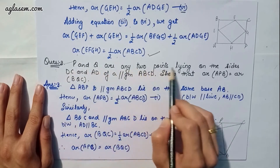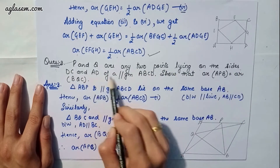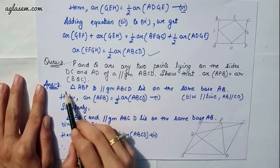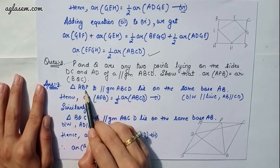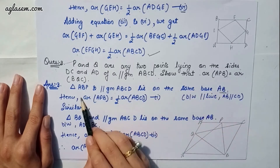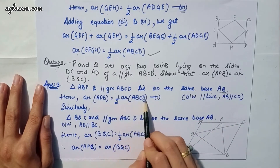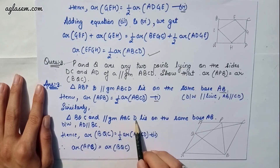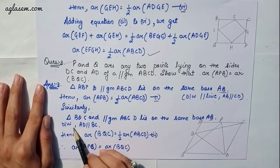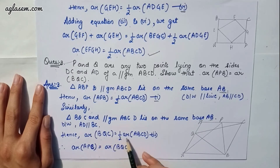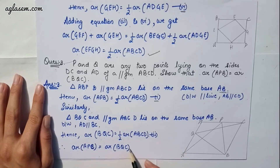Question 3 says: P and Q are any two points lying on sides DC and AD of parallelogram ABCD. Show that area APB equals area BQC. Triangle APB and parallelogram ABCD lie on the same base AB, so area APB equals half of area ABCD — equation 1. Similarly, triangle BQC and parallelogram ABCD lie on the same base BC between AD parallel to BC, so area BQC equals half of area ABCD. Therefore, area APB equals area BQC.